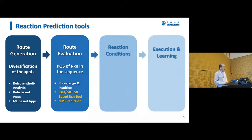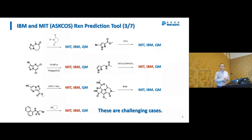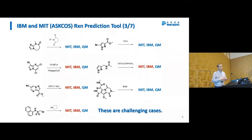Here are seven very typical mechanistic reaction examples. Highlighted in red are the predictions that are incorrect; highlighted in green are the predictions that are correct. These are challenging cases where our chemists have problems predicting with intuition, and this is where we need help. You can see that the quantum mechanics approach could differentiate itself from the others.